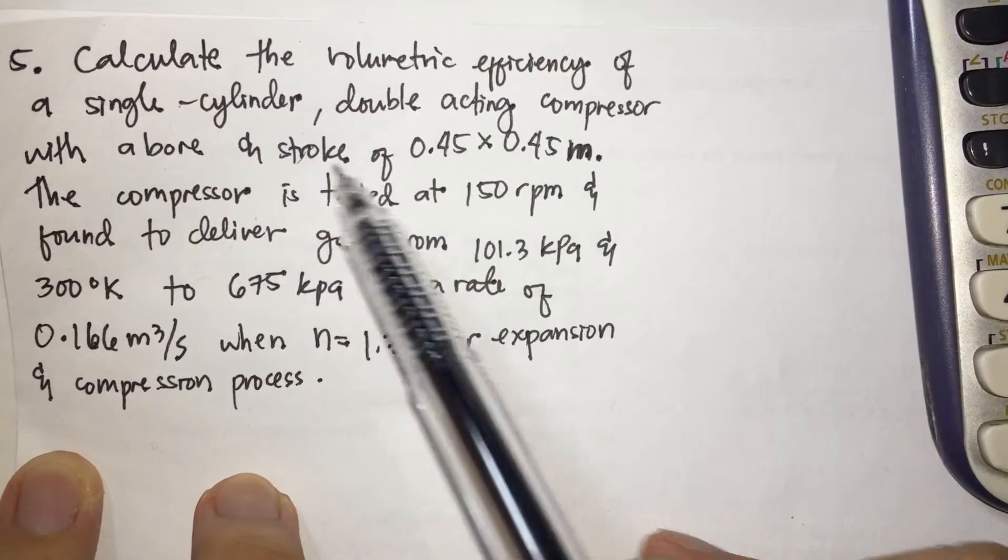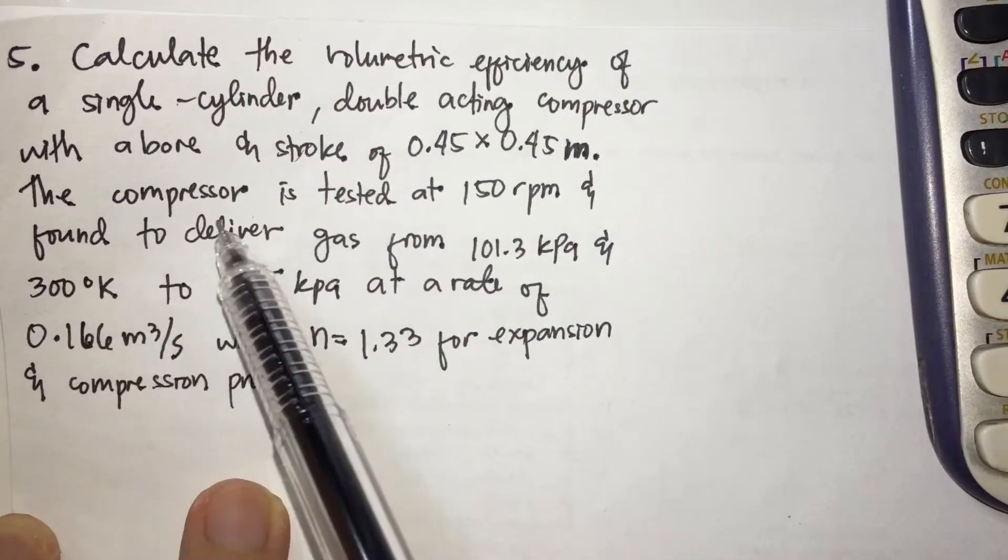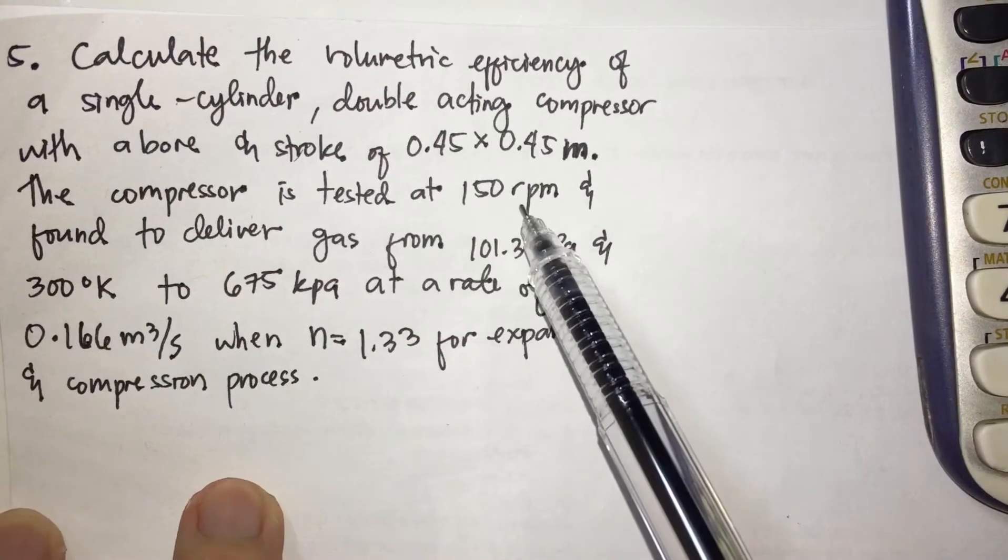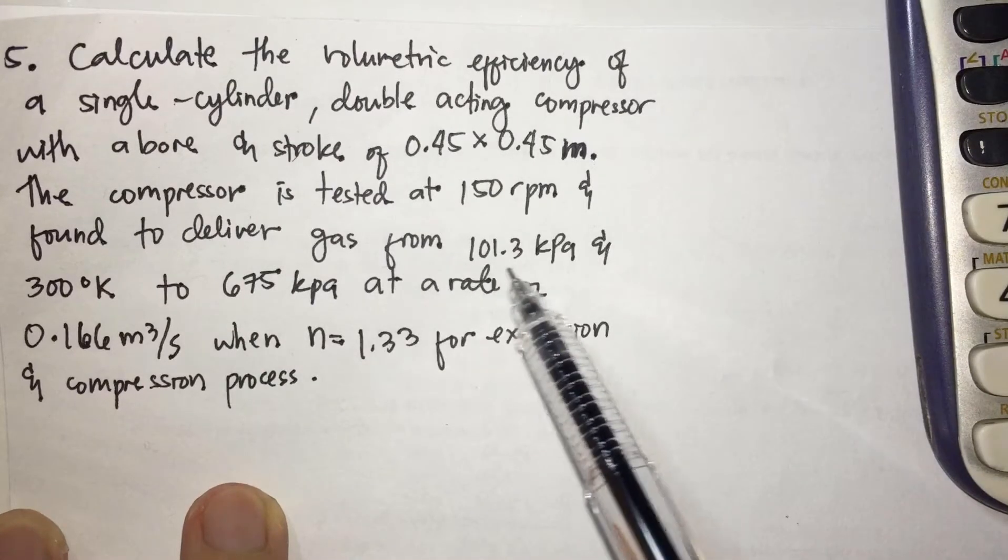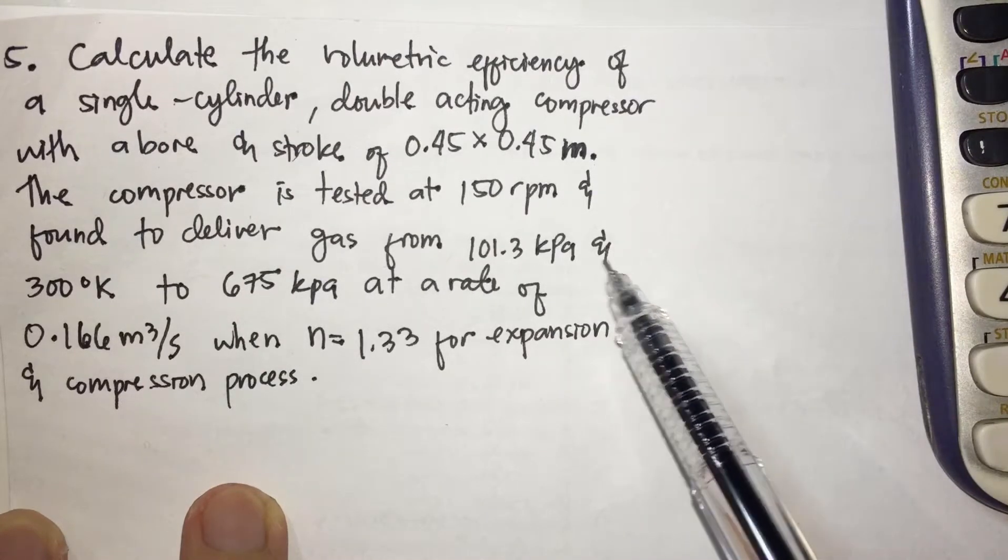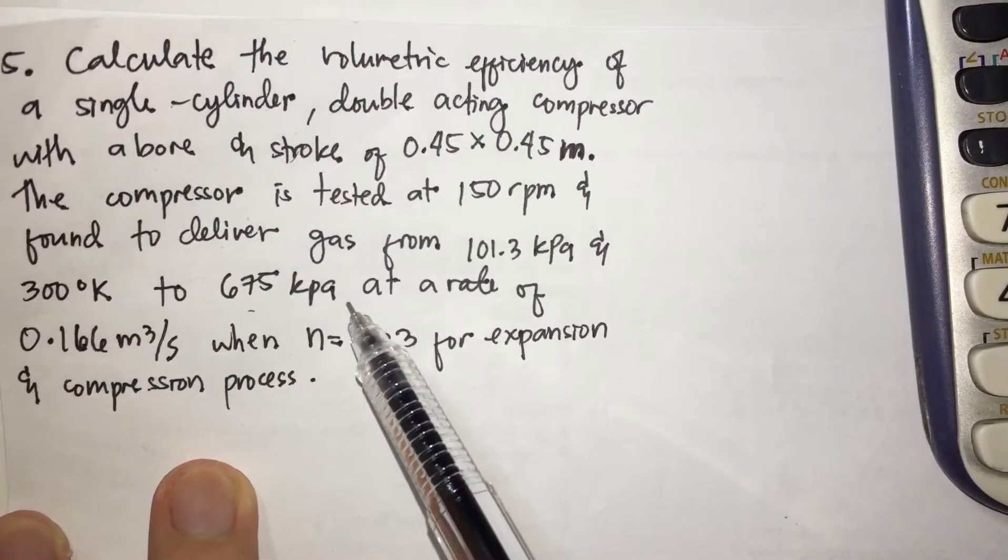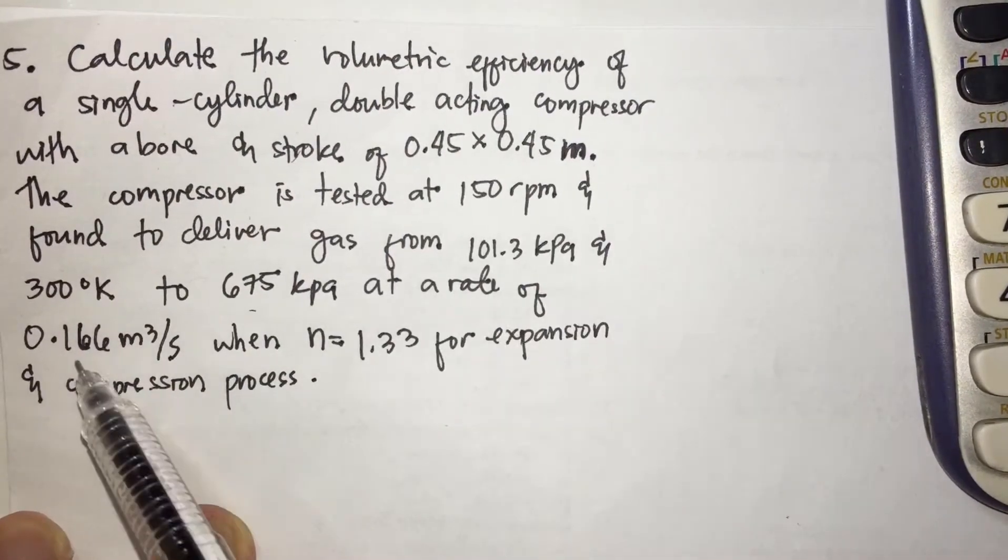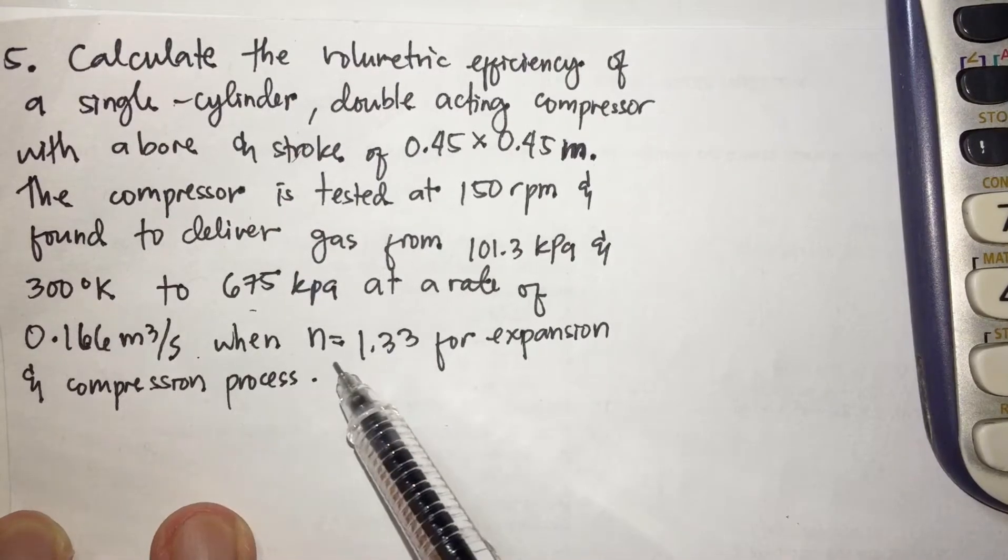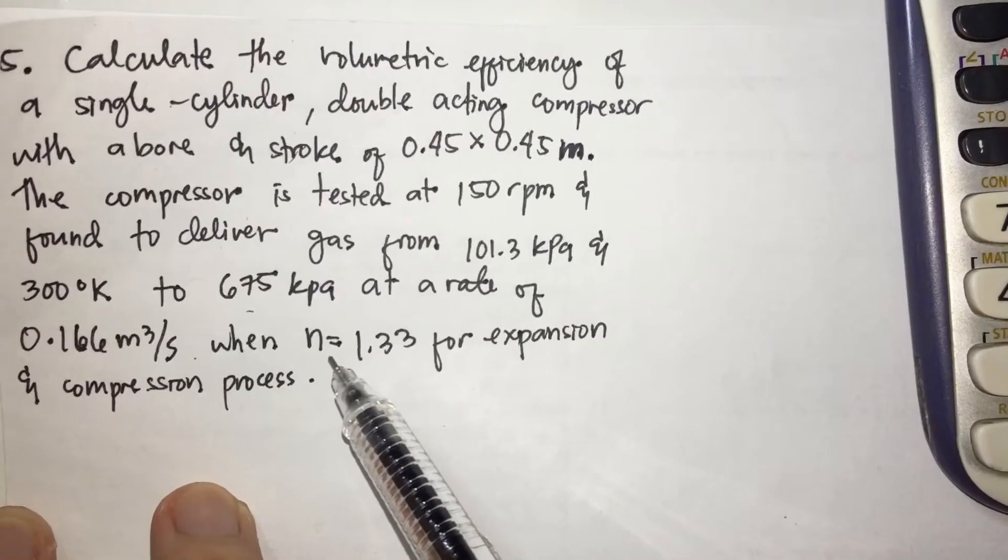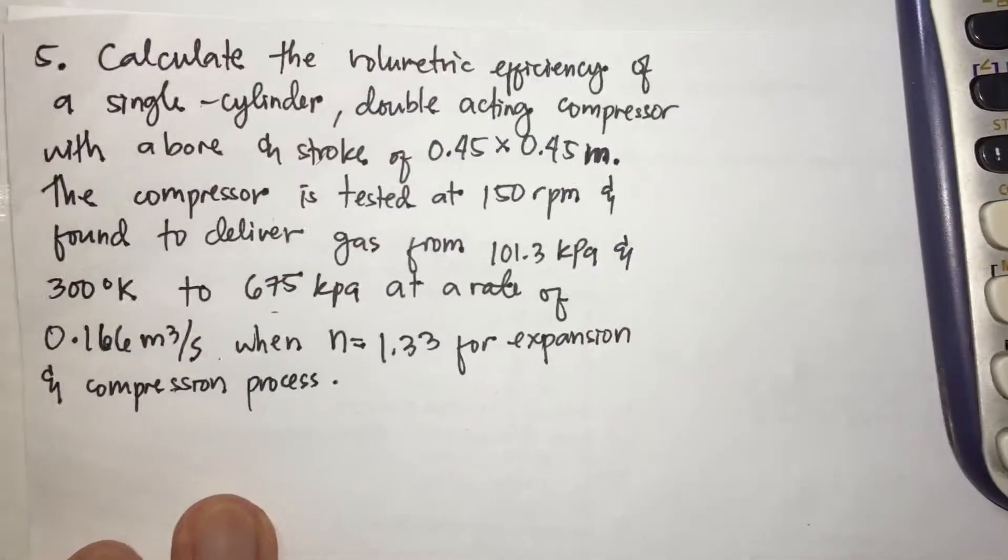With a bore and stroke of 0.5 by 0.5 meter. The compressor is tested at 150 rpm and found to deliver gas from 101.3 kilopascal and 300 degree Kelvin to 675 kilopascal at the rate of 0.166 meter cube per seconds when n, polytropic exponent, is 1.33 for expansion and compression process.